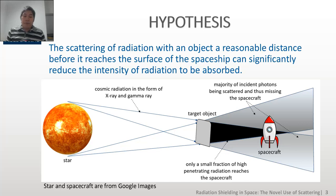And that leads us to the hypothesis where we have a spacecraft in front of a star, which could be the sun. And we propose that by placing a target object in between the sun and the spacecraft, the amount of incident photons that would usually reach the spacecraft would be reduced significantly, as the target object will deflect most of the incoming photons.